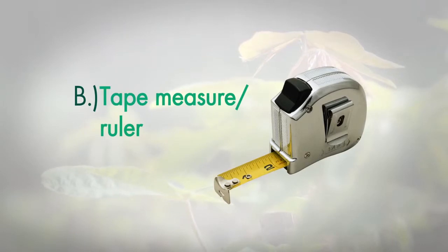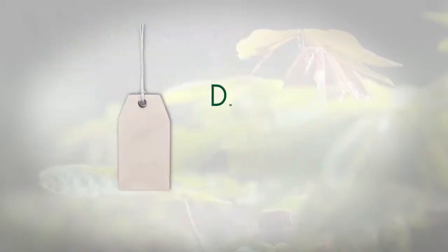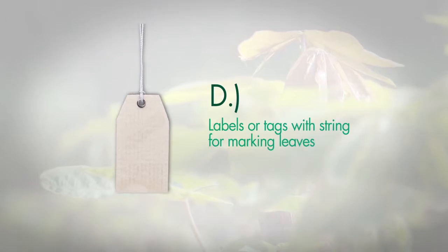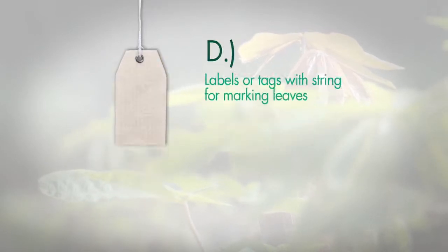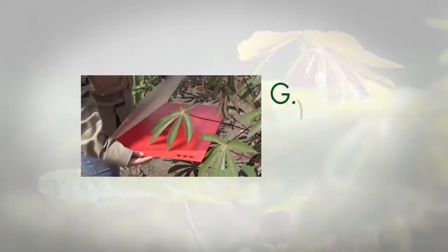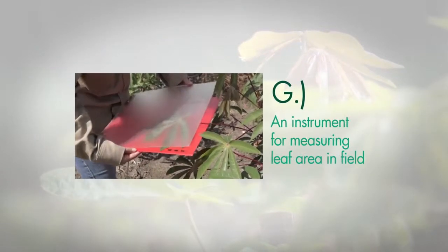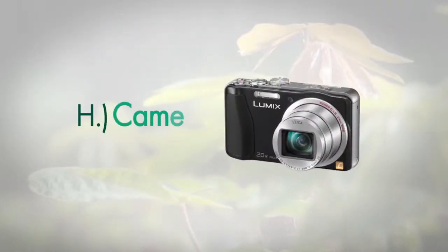Equipment required includes: a tape measure and ruler, forms for recording information, labels or tags with strings for marking leaves, a pencil, a permanent marker, an instrument for measuring leaf area in the field, a camera, and a computer.